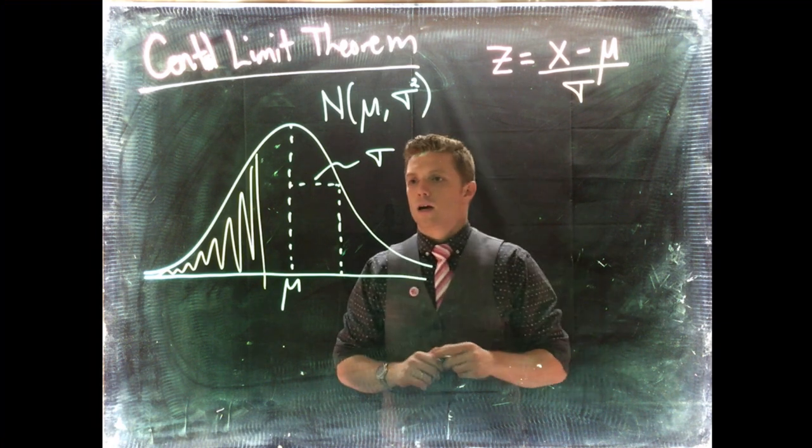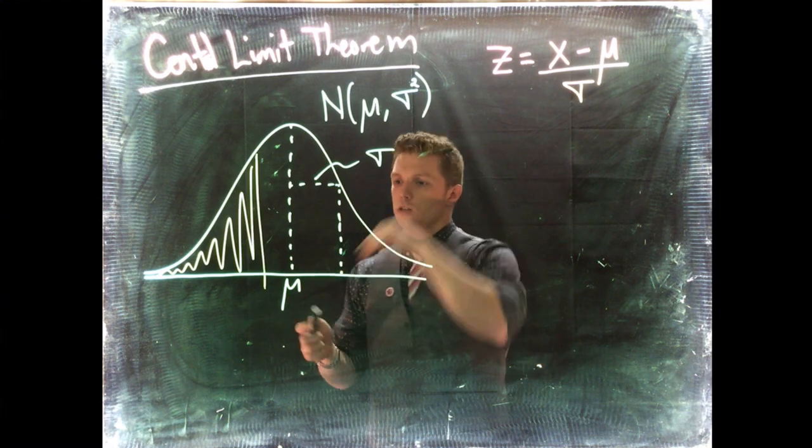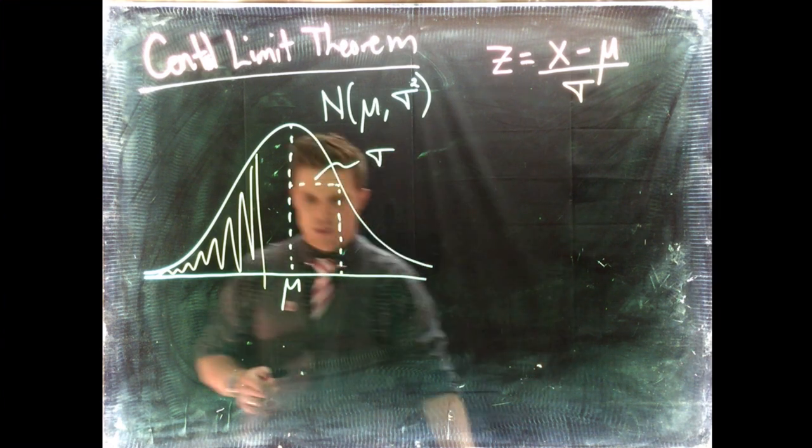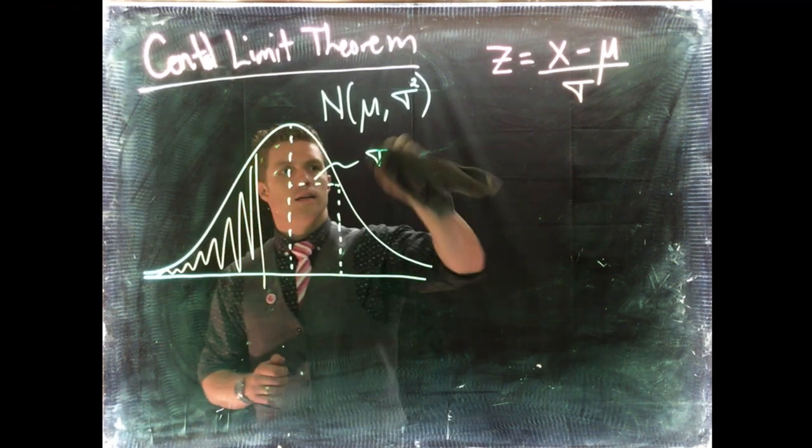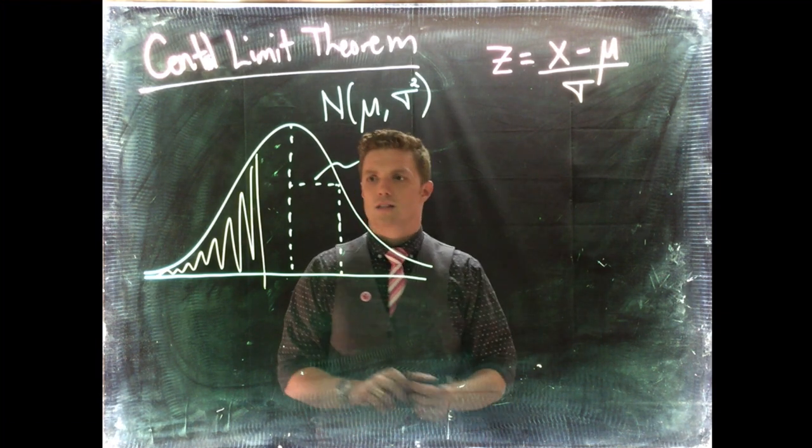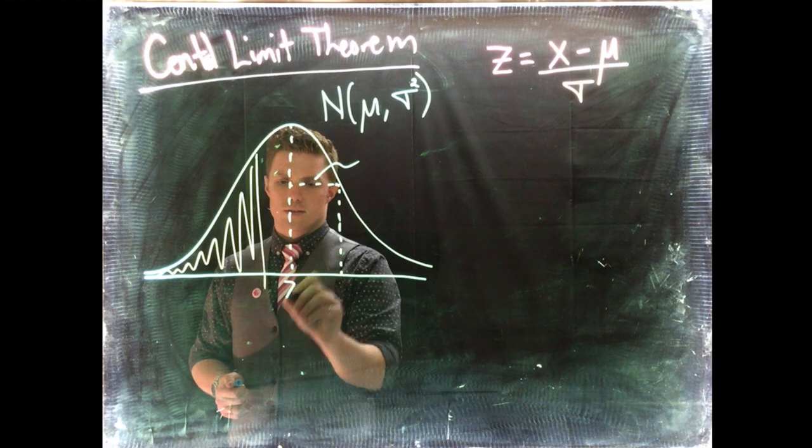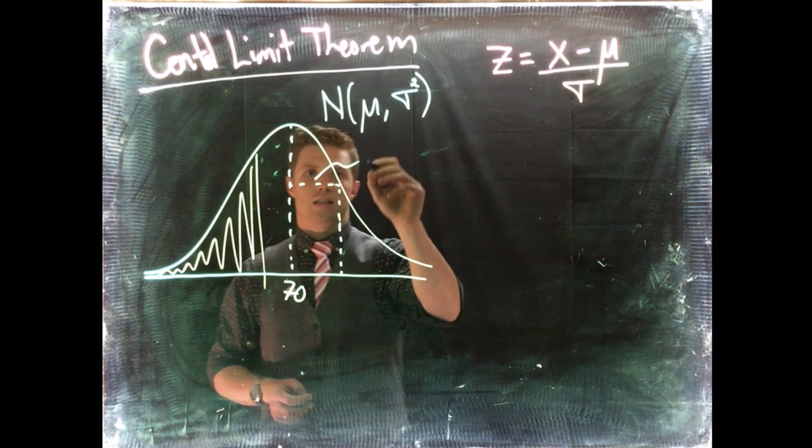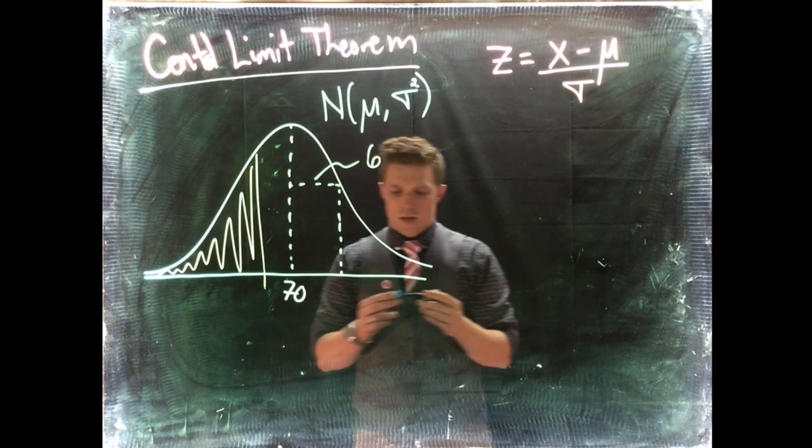Now let's make this an actual example. Let's go and instead of saying mu and sigma, let's put in some numbers. Let's do average male heights in the US, so we could put in something like the average is 70 and the standard deviation is roughly 6.